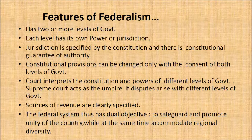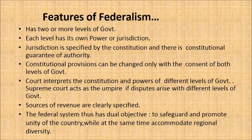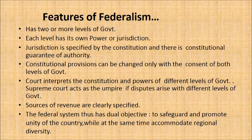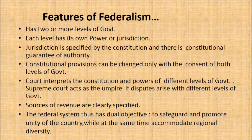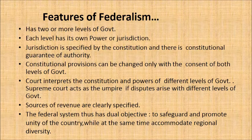Jurisdiction is specified — the central government's area of power and the state government's area of power are both specified in the constitution. Constitutional provisions can be changed only with the consent of both levels of government — any change to the constitution can be done only with consent of both the central and state government. The court interprets the constitution and the powers of different levels of government. The Supreme Court acts as the umpire if disputes arise between different levels of government.